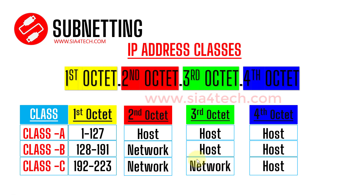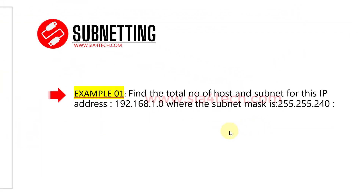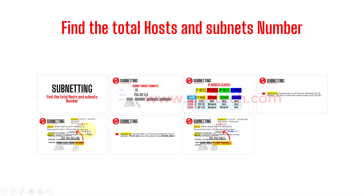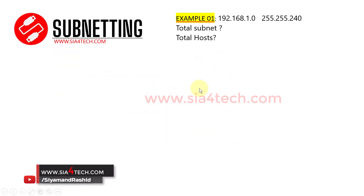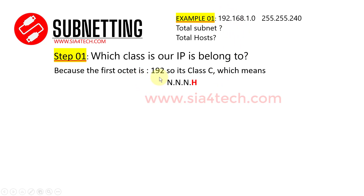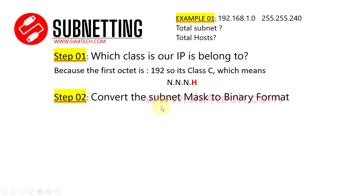That's why Class C gives you the lowest or smallest number of IP addresses for hosts. Let's go through the example and answer how you find the total number of hosts and total number of subnets. We have an IP address here with a subnet mask. The first step, as mentioned, is to determine which class the IP address belongs to. Because our IP starts with 192, this means we have Class C, which means we have one octet for the host.